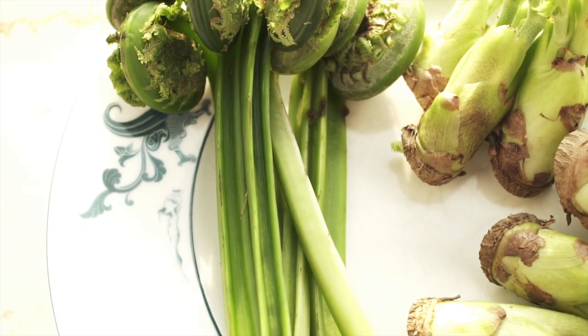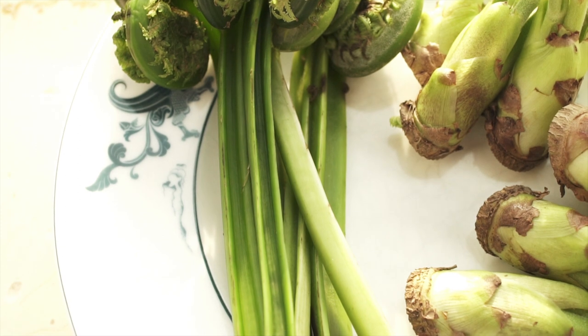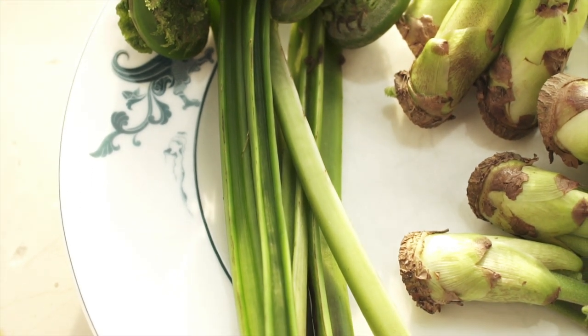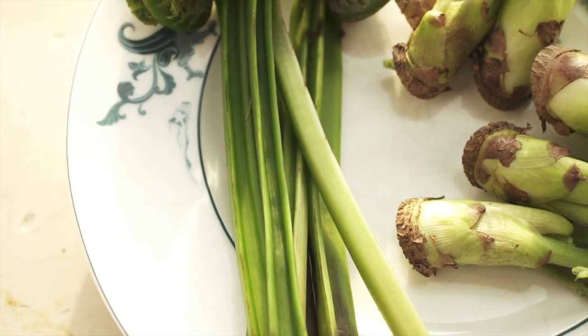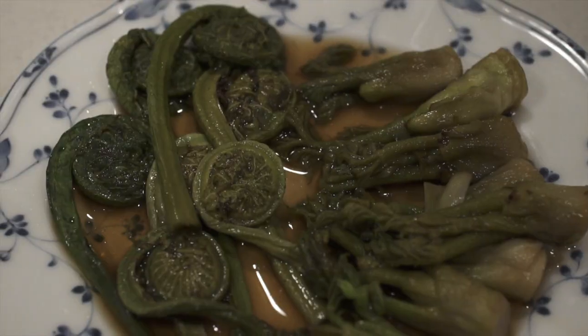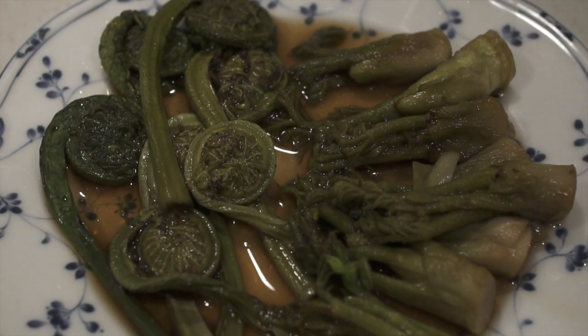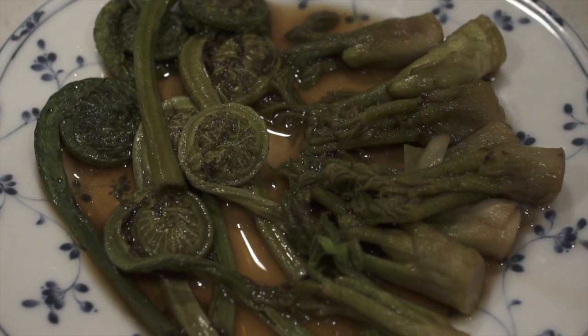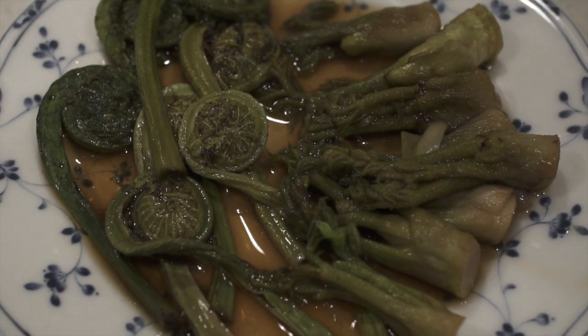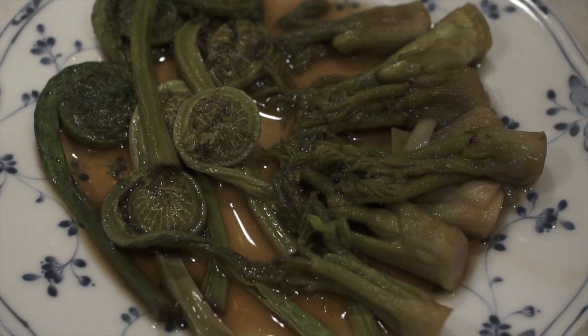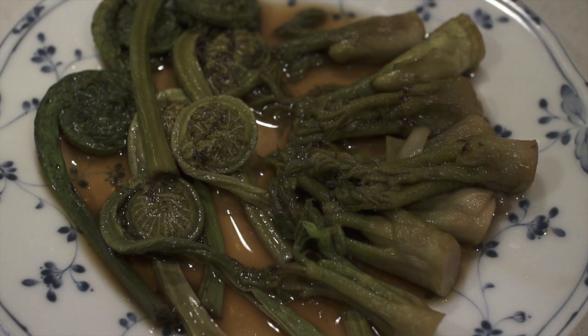The curly ones on the left are called Kagomi, which is ostrich fern. And the ones on the right is taranome, which is angelica tree sprouts. Here they are cooked. You need to cook them or they're toxic. They're in kind of a soy sauce base. They're kind of slightly bitter and nutty tasting.